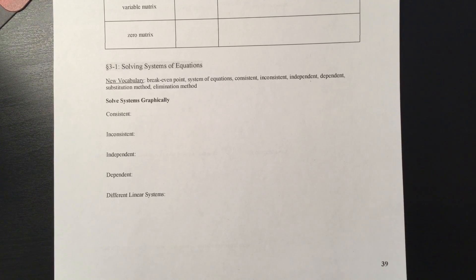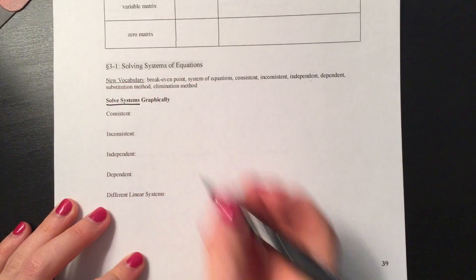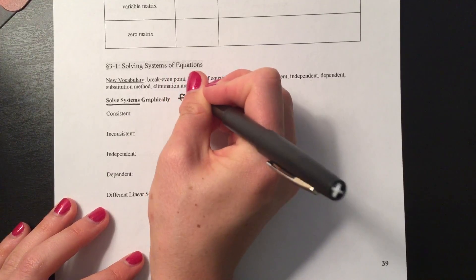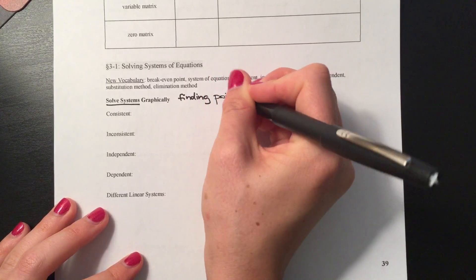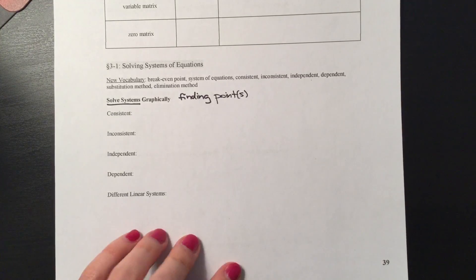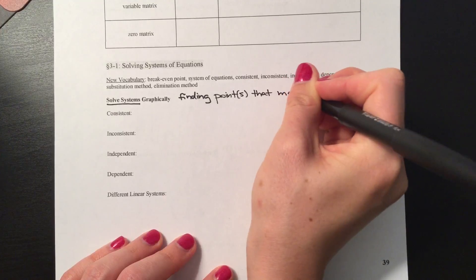You know, a solution to one equation is whatever number or numbers make that equation true. It's the same with systems — it's just that there are multiple equations to deal with. So when we say to solve a system, solving a system means finding any point or points — maybe one point, maybe multiple points — that make both equations true.